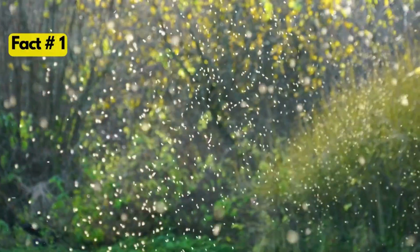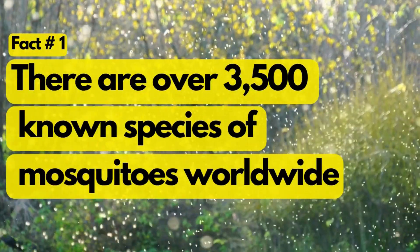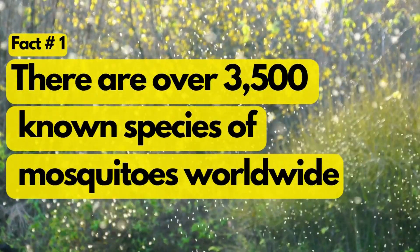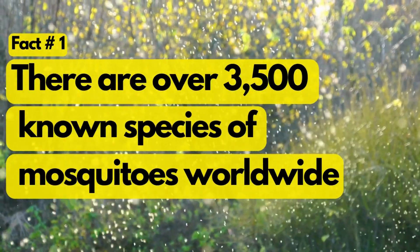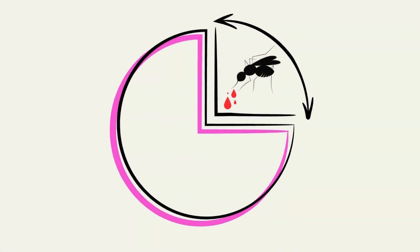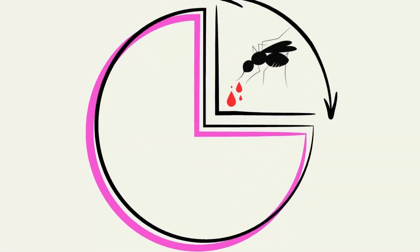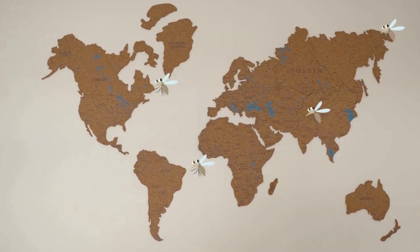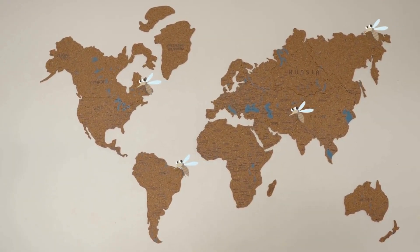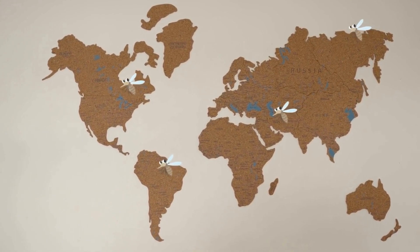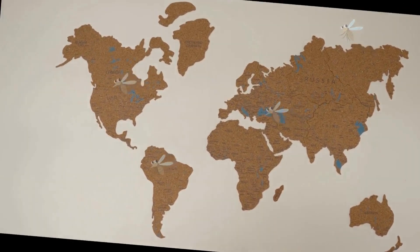Fact number 1. There are over 3,500 known species of mosquitoes worldwide, but only a fraction of them bite humans. It would take forever to mention all 3,500 species, so here are 10 species of mosquitoes from different parts of the world that you probably have not heard of.